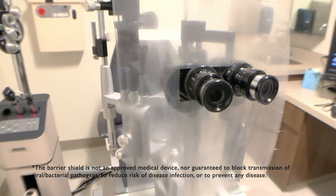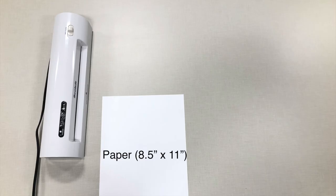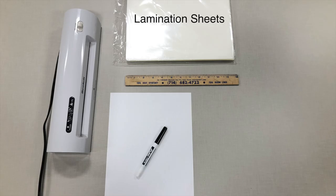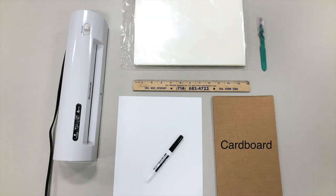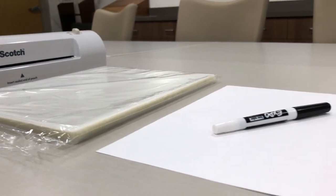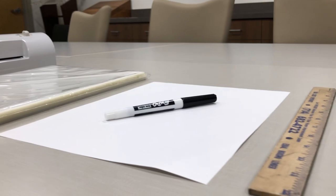For this, you'll need a thermal laminator, a standard piece of paper, marker, ruler, lamination sheets, blade, and cardboard. A thermal laminator can be purchased for around $20 and may be more economical than purchasing heavier transparent paper.